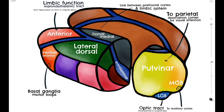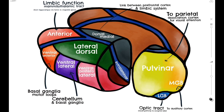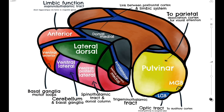Posterior to this, we have the ventral lateral nucleus, which is associated with the cerebellum and the basal ganglia. Moving posterior again, we have the ventral posterior lateral nucleus, or VPL for short, which is involved in both the spinothalamic pathway and the dorsal column medial lemniscus pathway. Finally, medial to this, we have the ventral posterior medial nucleus, or VPM for short, which is associated with the trigeminothalamic tract.